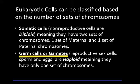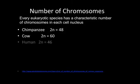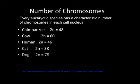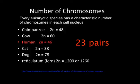Germ cells, or gametes, are reproductive cells or sex cells such as sperm and eggs. These are haploid, meaning they only have one set of chromosomes. Every eukaryotic species has a characteristic number of chromosomes in each of its nuclei. Chimpanzees have 48 chromosomes, a cow has 60, humans have 46, cats have 38, dogs have 78, and a fern called the reticulatum fern has anywhere from 1,200 to 1,260 chromosomes. The only one you should remember here is that humans have 46 chromosomes, or 23 pairs.